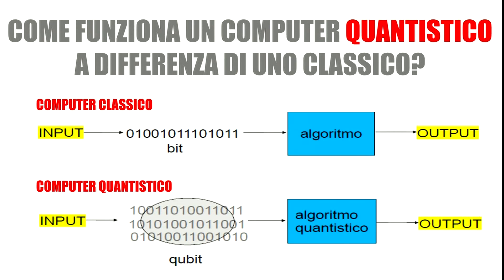In what way is this computer different? The current computer works with what is called the bit — a sequence of 0s and 1s that produces, through an algorithm, the final result. In quantum mechanics, however, by using the superposition of states, we can use 0 and 1 simultaneously. This obviously gives us an increase of exponential computational potential, making quantum computers very fast and very, very powerful.